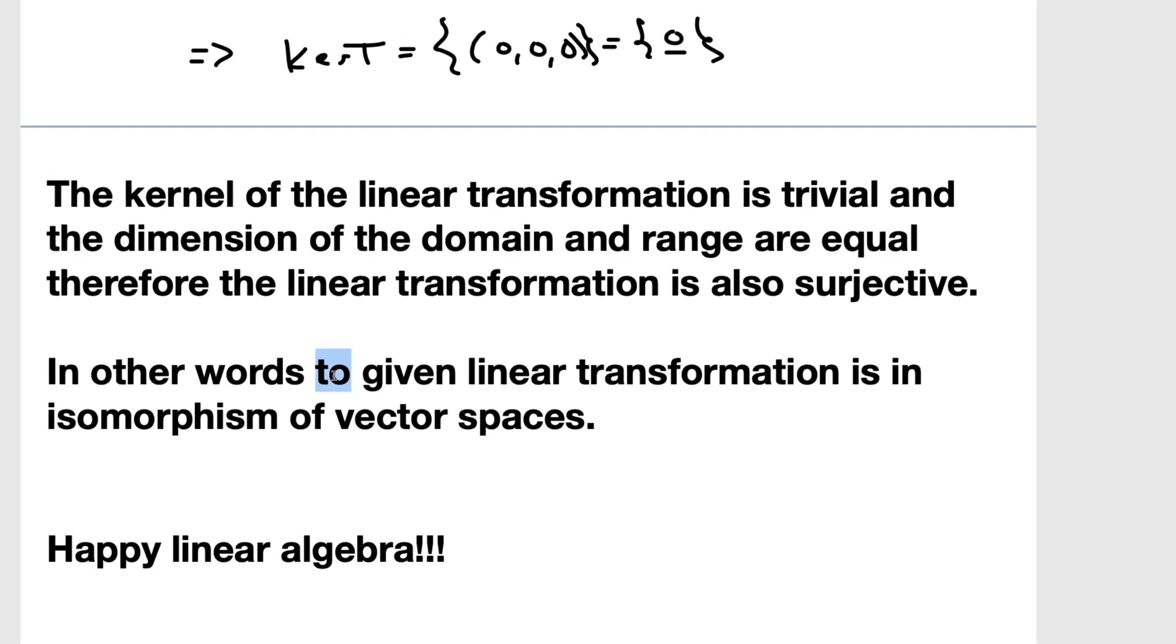Therefore, the linear transformation is also surjective. In other words, the given linear transformation is an isomorphism of vector spaces. In other words, it's injective and surjective. Let's just check this. The kernel of the linear transformation is trivial and the dimensions of the domain range are equal. Therefore, the linear transformation is also surjective. Yes, everything's correct now. I had a typo. Okay, great. Have an amazing day and see you in the future.